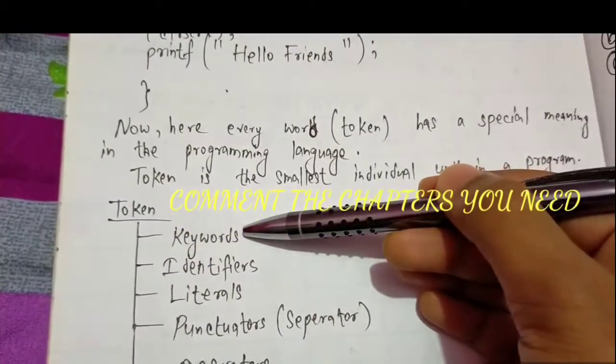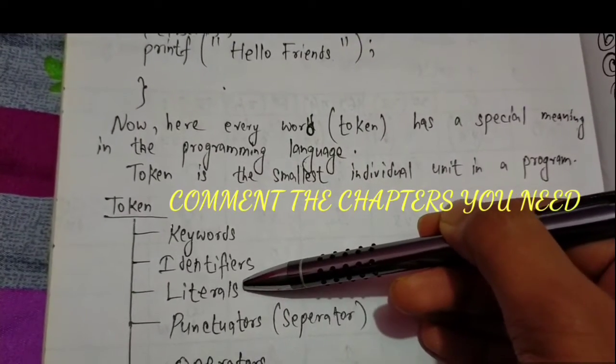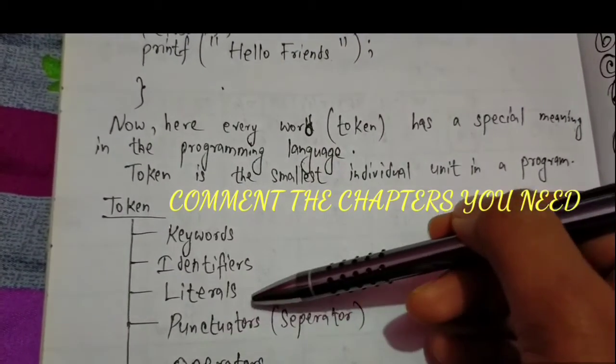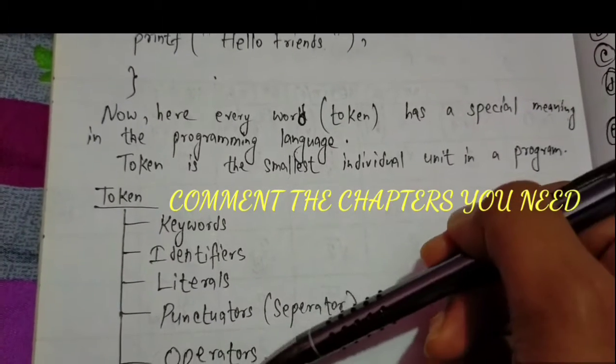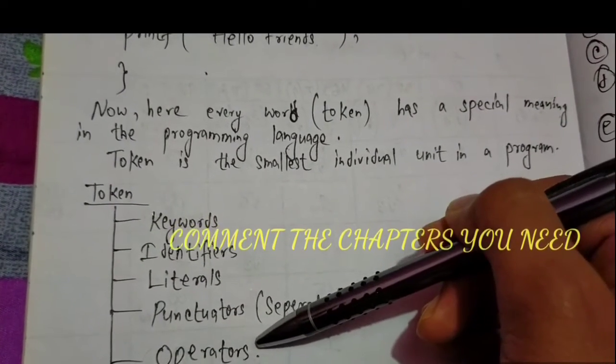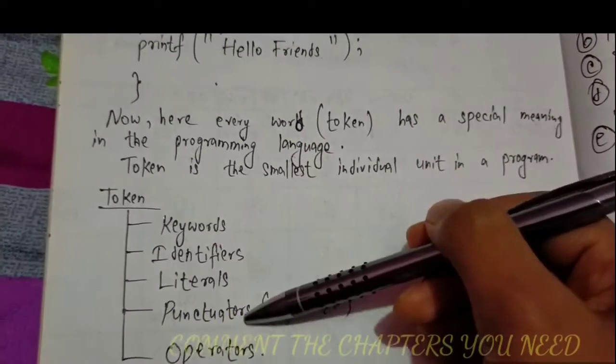First is keyword, second is identifier, third is literal, fourth is punctuator which are also called separators, and fifth is operators.